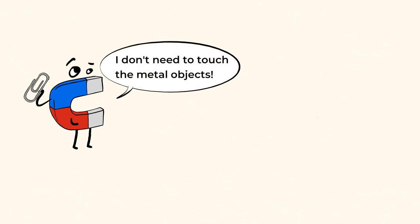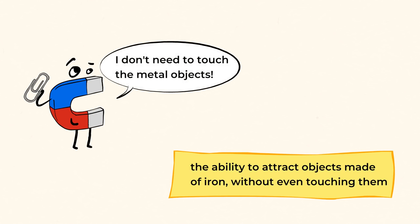Did you see that the magnet didn't even need to touch any of the metal objects? The ability to attract objects made of iron, without even touching them, is called magnetism. It works all the time, even over a distance.